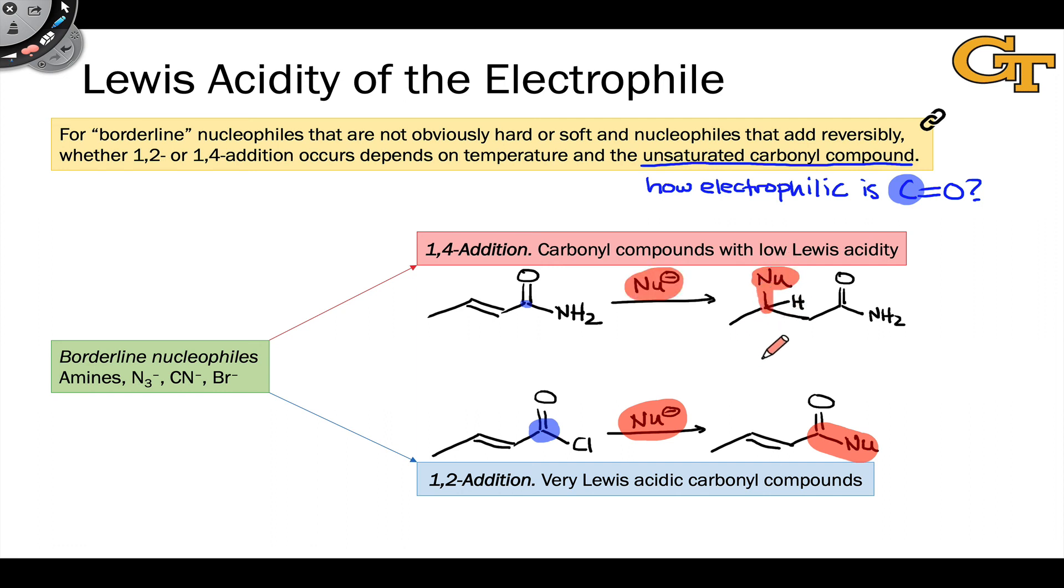Of course, there is a gray area here between the amide and acyl chloride, which kind of sit on opposite ends of the spectrum, where we might expect a mixture of 1,2 and 1,4 addition products. And we can think about using the other factors to overcome those ambiguities or overcome a product mixture. For example, we might heat the reaction to high temperature to try to drive 1,4 addition or use a very hard nucleophile to try to drive 1,2 addition.